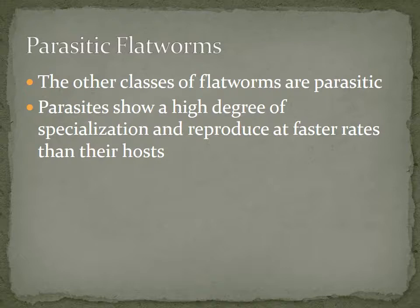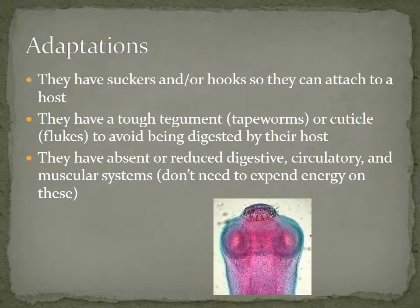The other classes of flatworms we'll look at are all parasitic. Parasites often show a high degree of specialization and reproduce at much faster rates to survive. Adaptations of parasitic worms include suckers and/or hooks that allow them to attach to a host. Most have a tough tegument on their outer layer — as seen in tapeworms — or a cuticle, as in flukes, to prevent the host from digesting them.